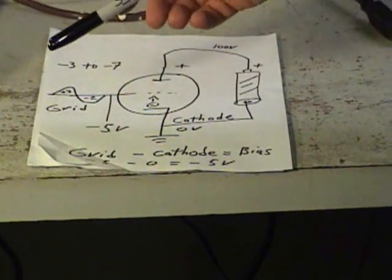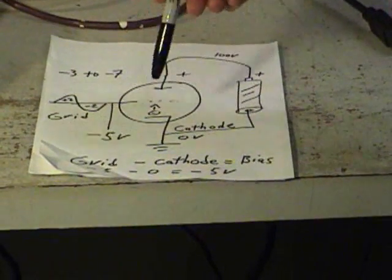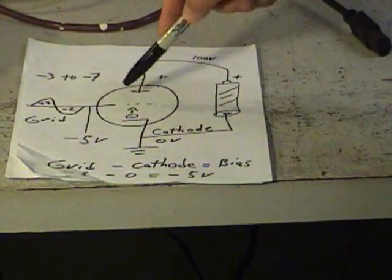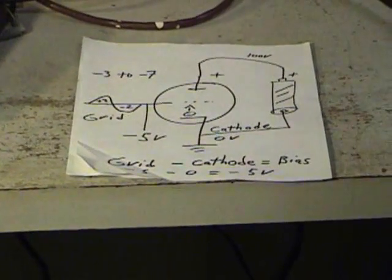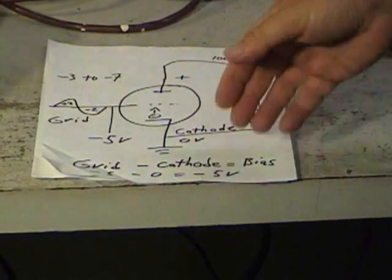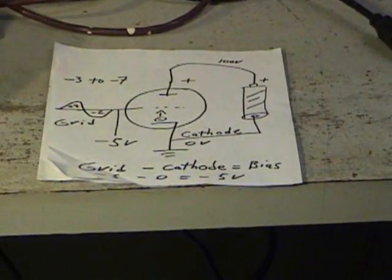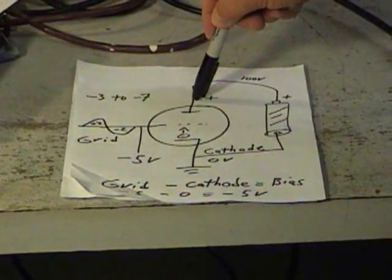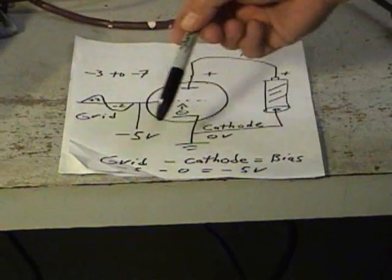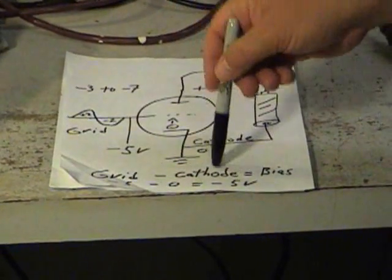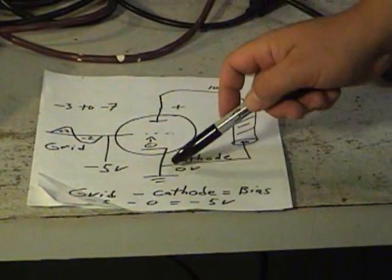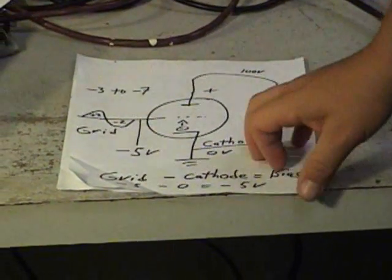That's how when we set this bias, this idle point, then your music signal, guitar signal, can modulate that and create a copy of this signal at the plate. The British call tubes valves and it's for that reason. It's like a valve turning on and off. The control grid acts as a valve modulating the flow of electrons through the tubes. You can have a tiny signal here and yet create a really big current swing at the plate. We've got grid voltage minus cathode voltage equals our bias voltage. Grid voltage is negative 5 minus 0 volts. The cathode is connected to ground. So, we get negative 5 volts.